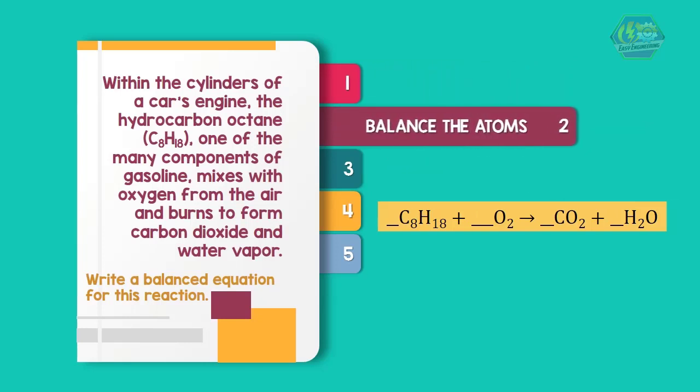Step 2: Balance the atoms. Start with the complex C8H18 and balance O2 last. The C atoms in C8H18 end up in CO2. Each CO2 contains 1 C atom, so 8 molecules of CO2 are needed to balance the 8 C atoms in each C8H18. The H atoms in C8H18 end up in H2O. The 18 H atoms in C8H18 require the coefficient 9 in front of H2O.